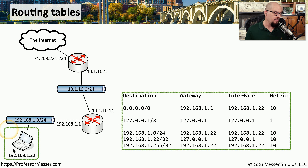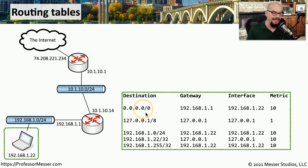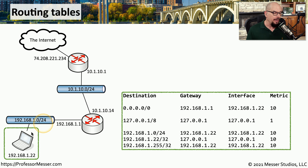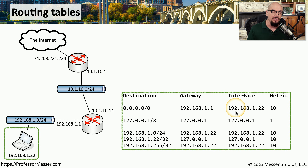If we're sending traffic from this laptop to a location not specifically listed in the routing table, we use the default route of 0.0.0.0/0, because that matches anything not specifically listed. To get to that destination, we use a gateway address or next hop of 192.168.1.1 — anything sent to that network goes directly to this router interface. To reach that gateway, we send traffic out our local interface at 192.168.1.22, which is indeed the IP address on this laptop.